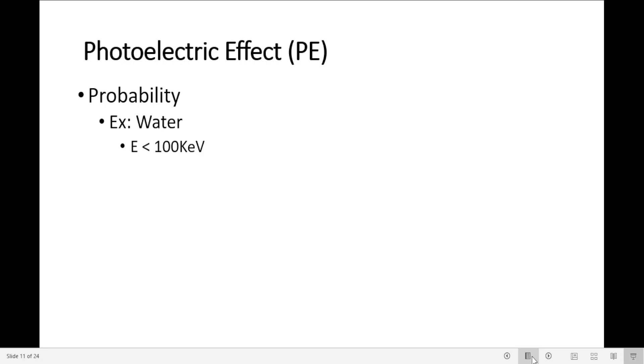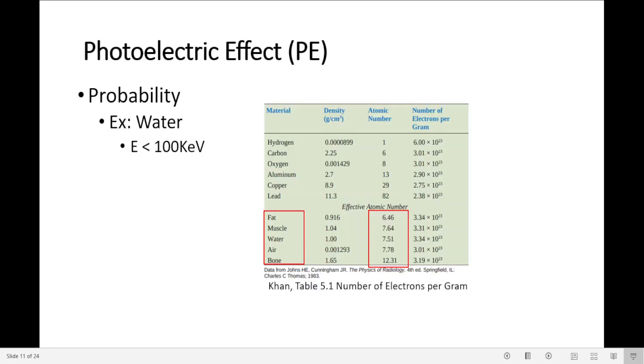The probability of photoelectric effect occurring in water is for energies lower than 100 kiloelectron volts. And why water? Why do we want to know the probability in water? It's because water represents a low atomic number material, similar to body tissue.